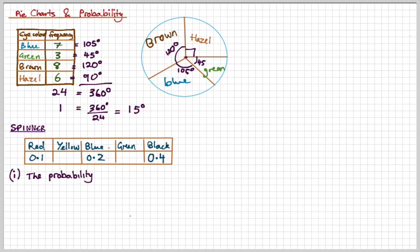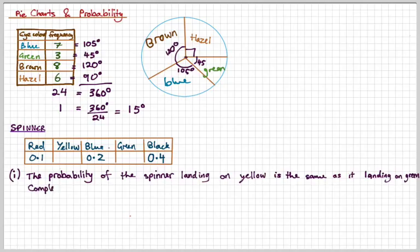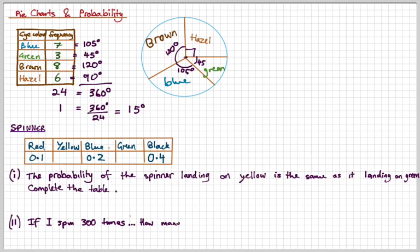So question one: the probability of the spinner's landing on yellow is the same as it landing on green. Complete the table. Question two: if I spin 300 times, how many times would I expect to get black?